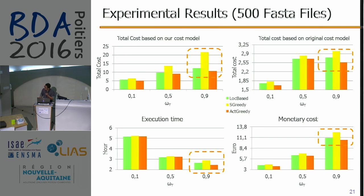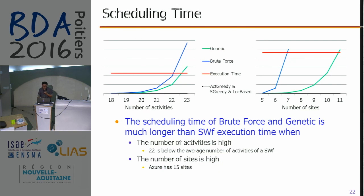Although all three approaches correspond to almost the same execution time, sometimes our approach corresponds to less execution time. In terms of monetary cost, our approach is always better compared with local-based and S-grade. In terms of scheduling time, our approach is always reasonable compared with the execution time itself. Once the number of activities is large, for example bigger than 22, or the number of sites is bigger than 7 or 10, the scheduling time of genetic and brute force exceeds the execution time itself.